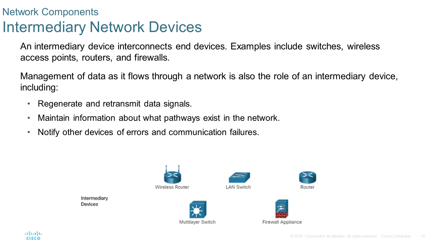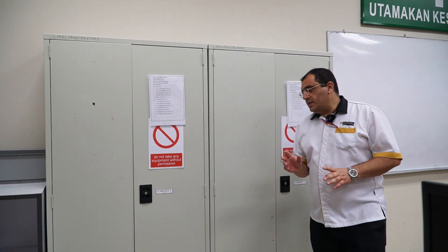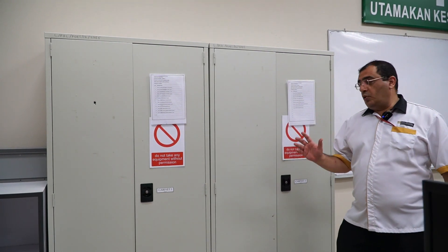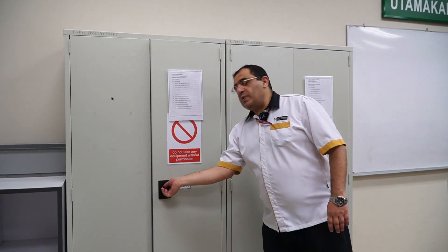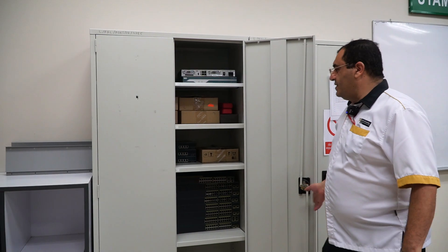Besides that, we also have a wireless router, firewalls, and a multi-layer switch. I'm going to show you what these devices look like — some of our networking components, which we call intermediary devices.